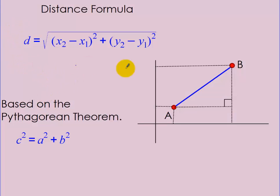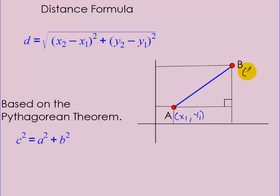Distance formula. The distance formula is the square root of the sum of the difference between the x's squared and the difference between the y's squared. So if you have two points with coordinates, plug them in. The key thing is it doesn't matter which point is x2 and x1 and y2 and y1, but you have to be consistent. If I call point A x1 and y1, I better make sure point B is x2 and y2. Just be consistent so the first value is the same point every time. The distance formula is based off the Pythagorean theorem.